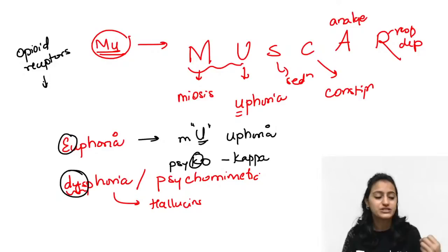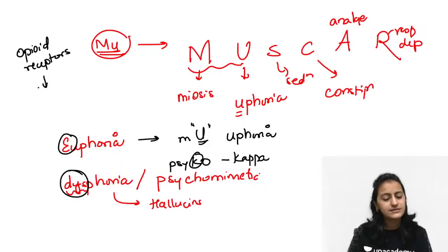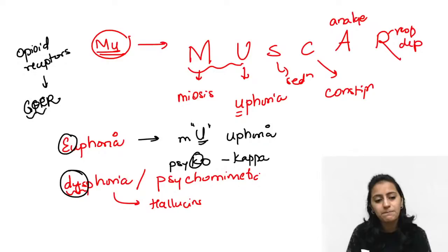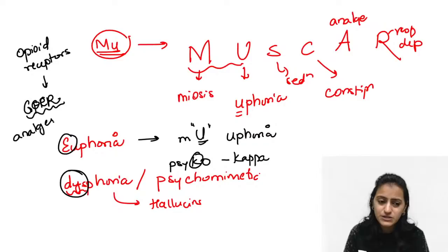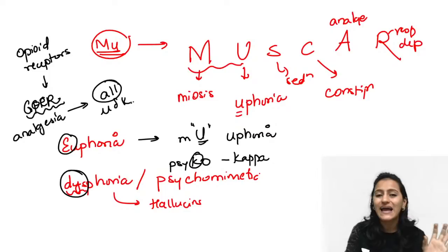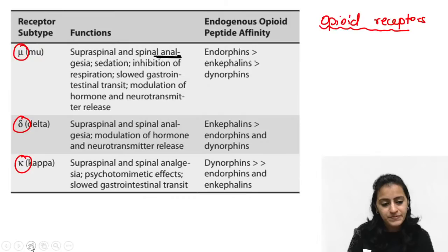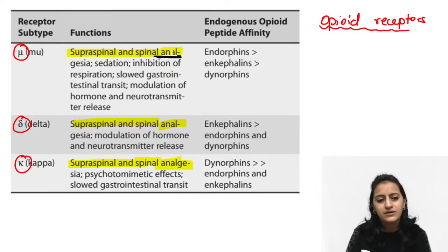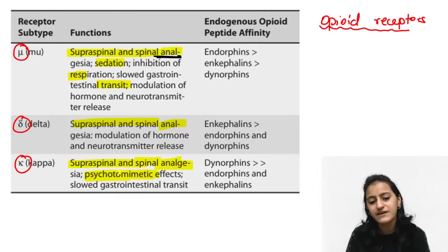All three receptors contribute to analgesia — mu provides both supraspinal and spinal analgesia. From the MUSCAR mnemonic for mu: meiosis, sedation, respiratory depression, slow GI transit (constipation). Very important: psychomimetic effects are your kappa receptor. Opioid receptors are G-protein coupled receptors.